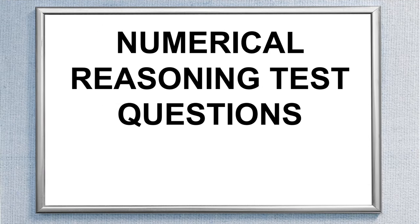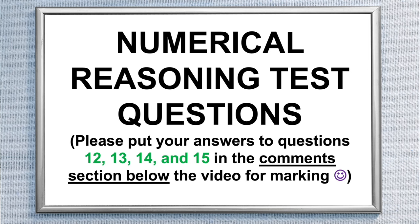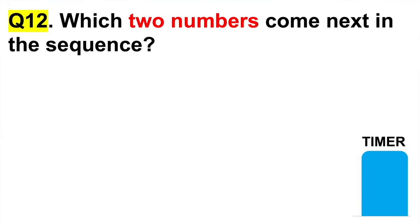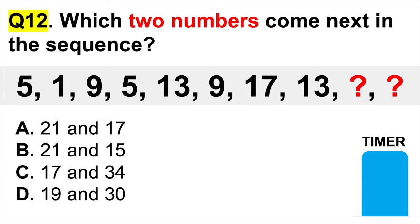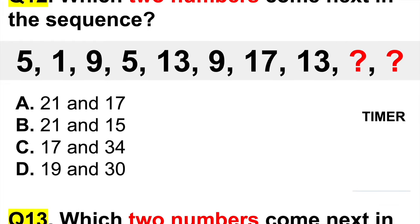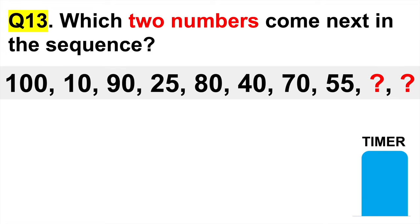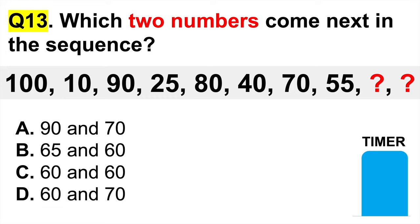Now it's your turn to try some numerical reasoning test questions. Please put your answers to questions 12, 13, 14, and 15 in the comments section below the video. Question 12: which two numbers come next in the sequence — is it A: 21 and 17, B: 21 and 15, C: 17 and 34, or D: 19 and 30? If you need more time, just pause the video. Question 13, a bit harder: which two numbers come next — A: 19 and 70, B: 65 and 60, C: 60 and 60, or D: 60 and 70? Use that same process.